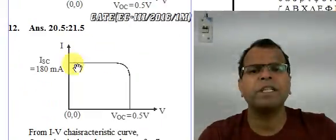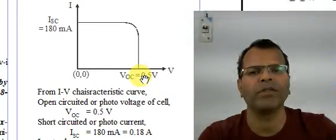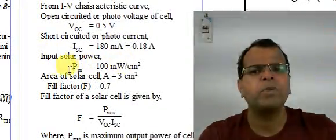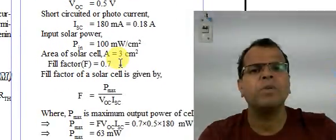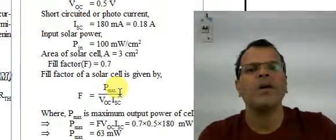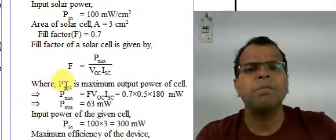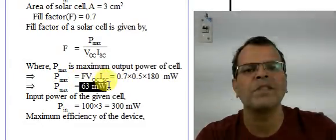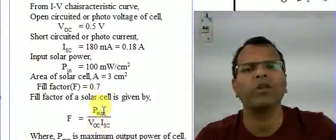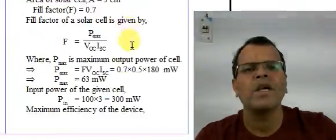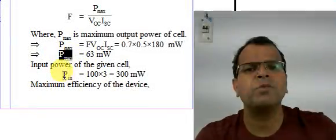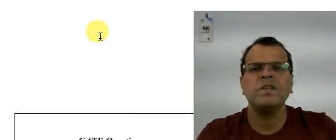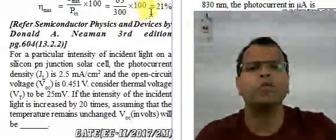From the figure, the short circuit current is 180 milliamperes and the open circuit voltage is 0.5 volt. The input solar power is 100 mW/cm² and the area is 3 cm², so input power = 100 × 3 = 300 mW. Fill factor equals maximum output power divided by VOC × ISC, so maximum output power = fill factor × VOC × ISC = 0.7 × 0.5 × 180 mA = 63 mW. Maximum efficiency = Pmax / Pin = 63 / 300 = 21%.